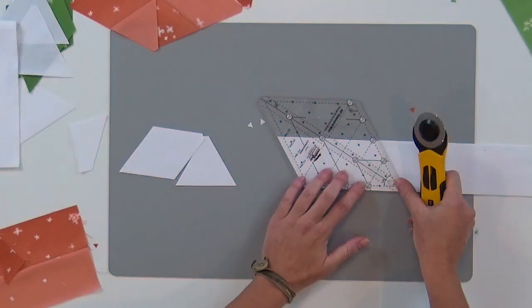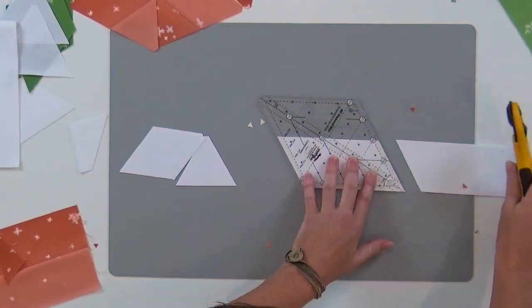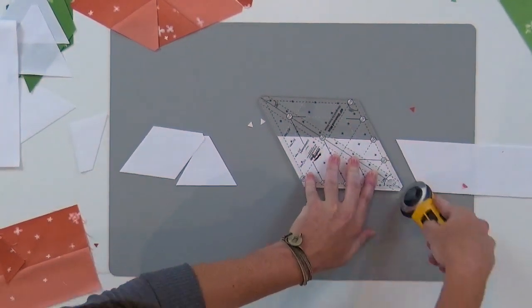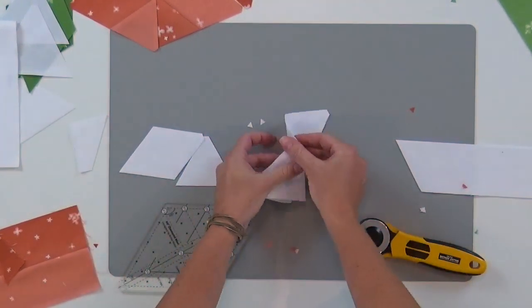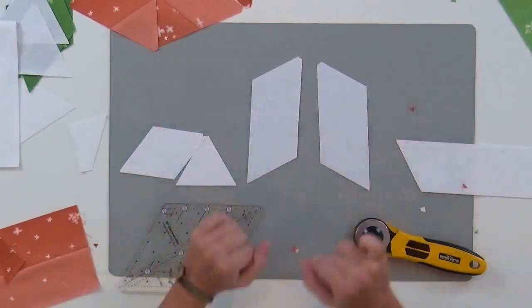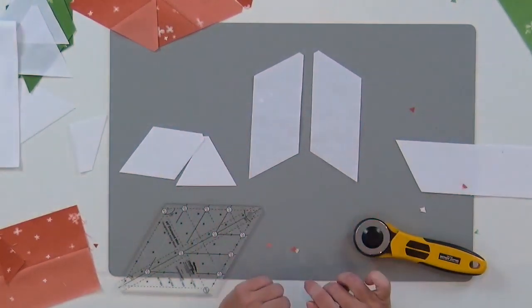This way where I get the flat tip, this will get me two mirror image parallelograms. Just like that. Talk about versatile. There you go.